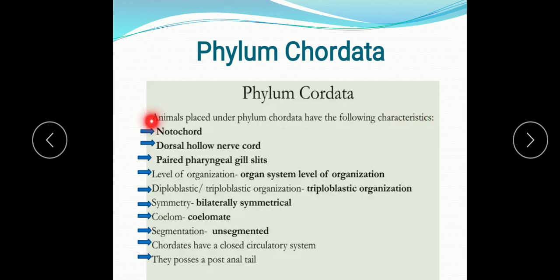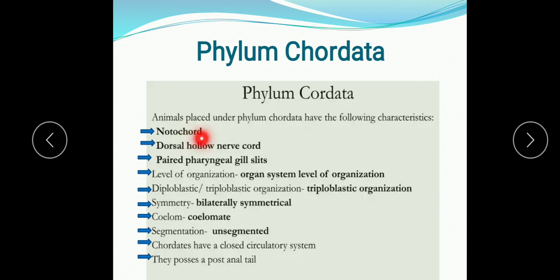What are the characteristic features? They have notochord. They possess notochord, dorsal hollow nerve cord is present in them, and paired gill slits. All these three features are present at some stage of their life. The notochord is the structure which further develops into the vertebral column in the vertebrates.